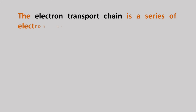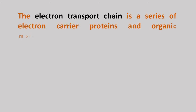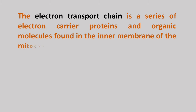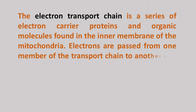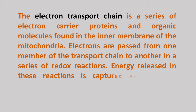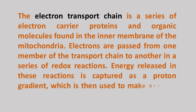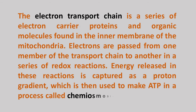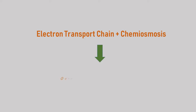The Electron Transport Chain is a series of electron carrier proteins and organic molecules found in the inner membrane of mitochondria. Electrons are passed from one member of the transport chain to another in a series of redox reactions. Energy released in these reactions is captured as a proton gradient, which is then used to make ATP in a process called chemiosmosis. The aggregate of these two closely associated processes — electron transport chain and chemiosmosis — is called oxidative phosphorylation.